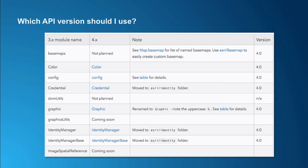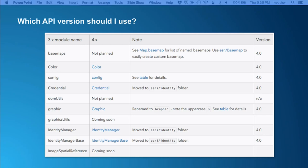Within the developer help there's a page called 'Which API version should I choose.' If you're on the fence and trying to figure out whether to work with version 3x or 4x, check out this page. It lists the available functionality in 4x, so you can say 'I need to build an editing app,' look it up, and see that editing's not in yet — so you'd want to use 3x until editing is available.